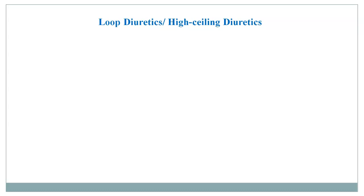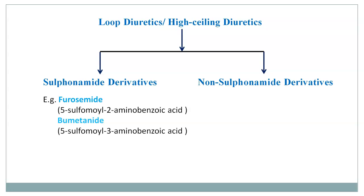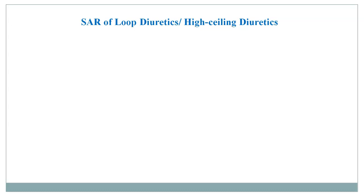The loop diuretics have two major classes: sulphonamide derivatives and non-sulphonamide derivatives. Examples of sulphonamide derivatives are furosemide and bumetanide, and an example of a non-sulphonamide derivative is ethacrynic acid. In this video we discuss in detail the structural activity relationship of the sulphonamide derivative class.